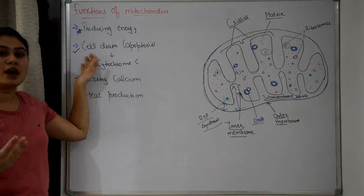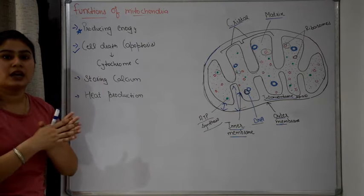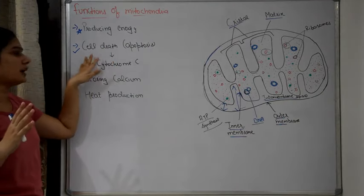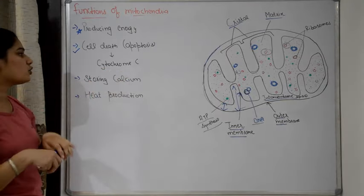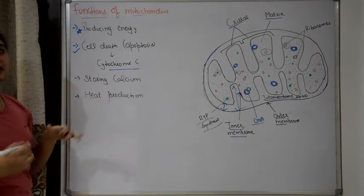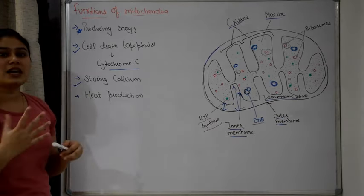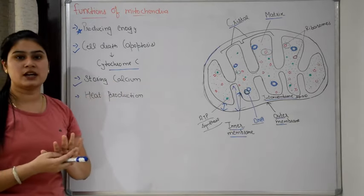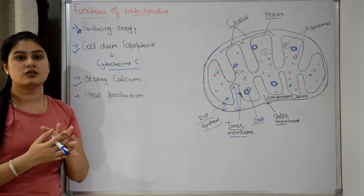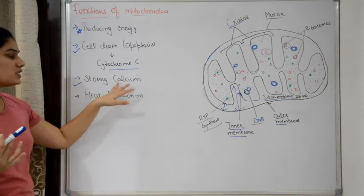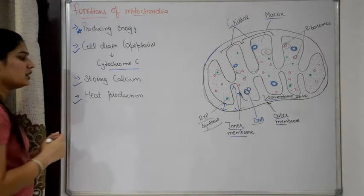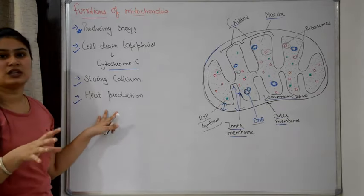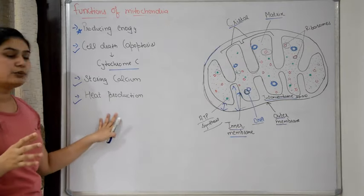Why does cell death occur? Any cell that has grown old, become damaged, or replicated incorrectly needs to be eliminated — the cell will die. This is how it works: mitochondria releases an enzyme called cytochrome C, which triggers cell death. The third function is storing calcium. Mitochondria also stores calcium, which performs many functions like cell contraction, muscle contraction, fertilization, and blood clotting. Another function is heat production — mitochondria also produces heat, for example when your body is cold and you shiver.